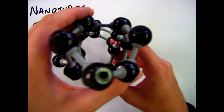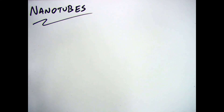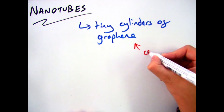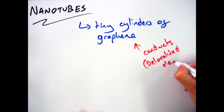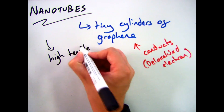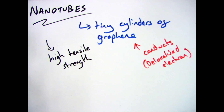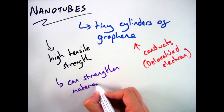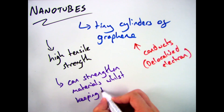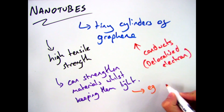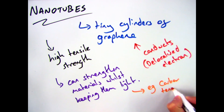Nanotubes on the other hand are also allotropes of carbon. They are cylindrical sheets of graphene which have delocalized electrons, meaning they can conduct electricity, and high tensile strength, which means they are really strong. This structure makes them particularly useful because they are strong yet light, so they can be used in things like tennis rackets where you want athletes to move them freely but with enough strength to hit a tennis ball.